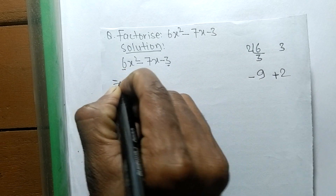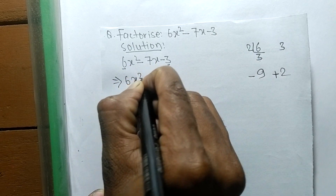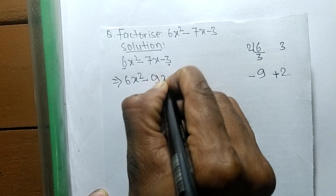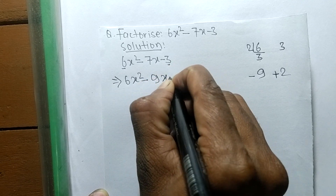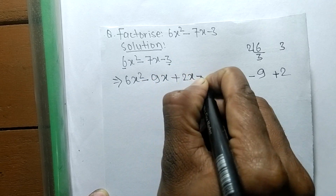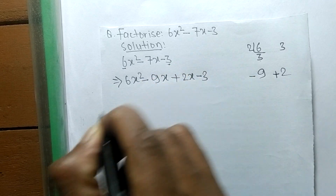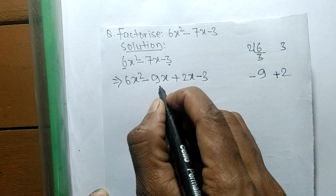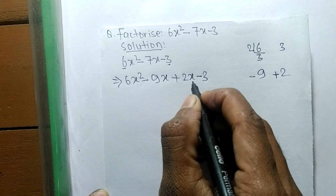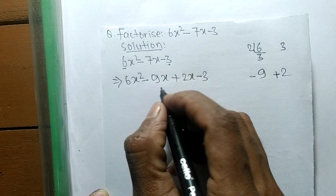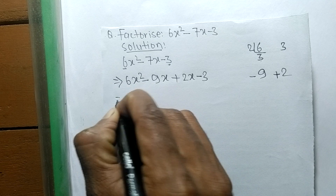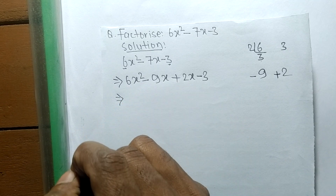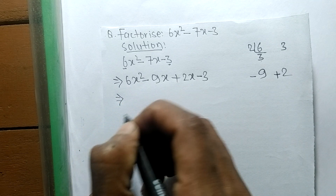So we can write it as 6x² minus 9x plus 2x minus 3. Minus 9x plus 2x means it is minus 7. Now we have to separate these expressions into 2 pairs.